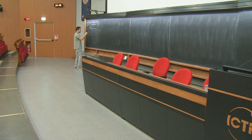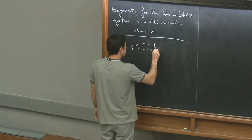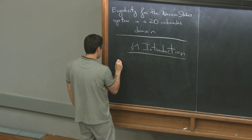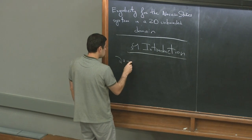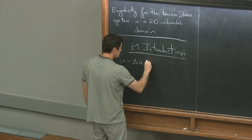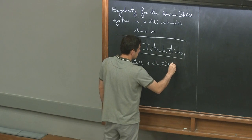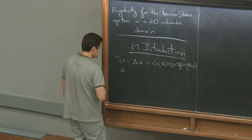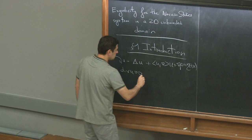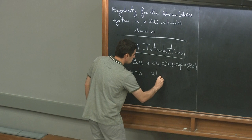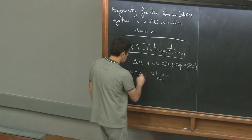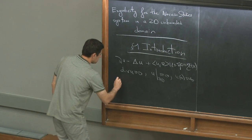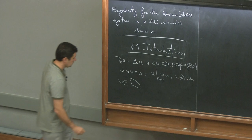I will start by a short introduction. We will study the classical Navier-Stokes system. The viscosity will not play any role, so I take it equal to 1. We are in the incompressible setting, and to fix the ideas, we will consider Dirichlet boundary conditions, but any reasonable condition will do. The space variable is in a domain D which will be unbounded.